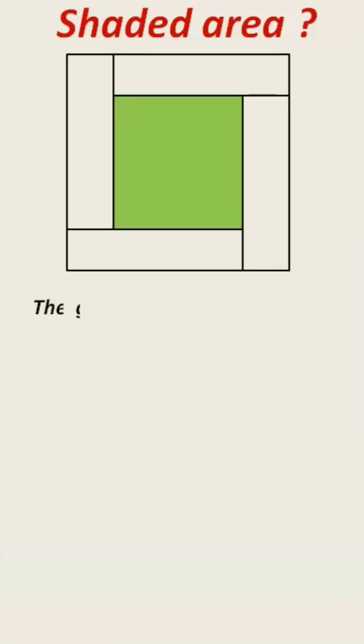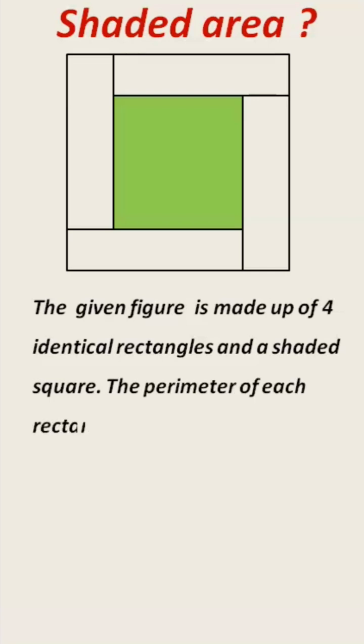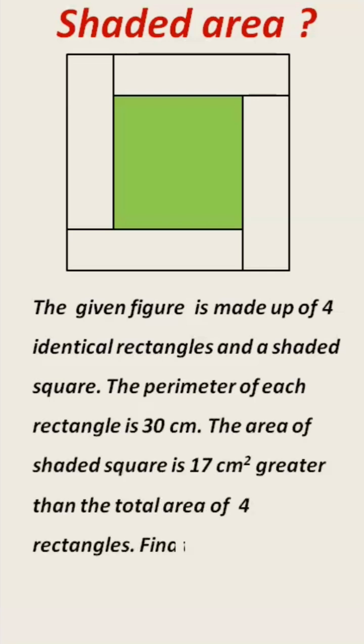The given figure is made up of 4 identical rectangles and a shaded square. The perimeter of each rectangle is 30 cm. The area of the shaded square is 17 cm² greater than the total area of 4 rectangles. Find the area of the shaded square.